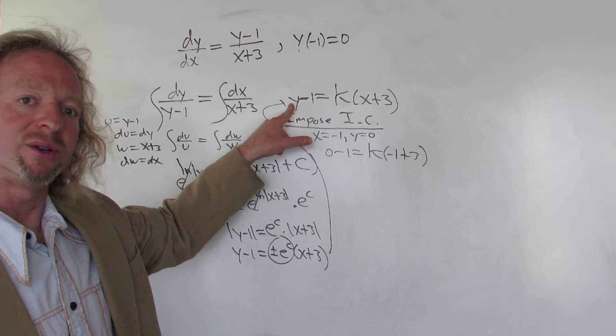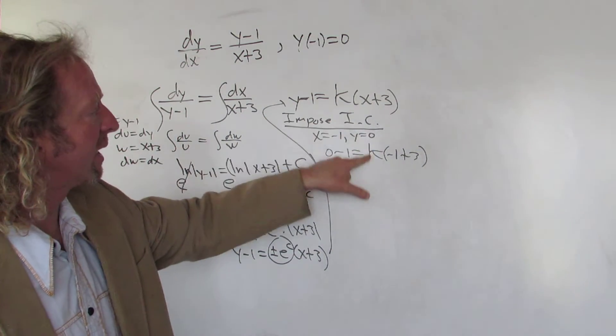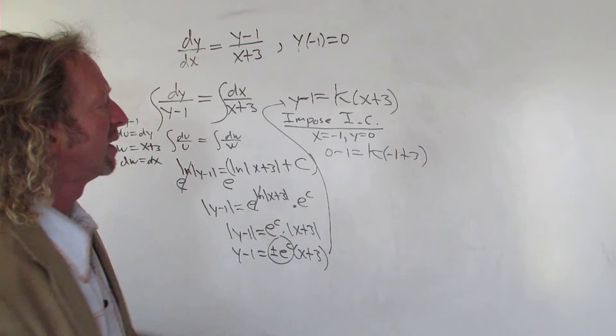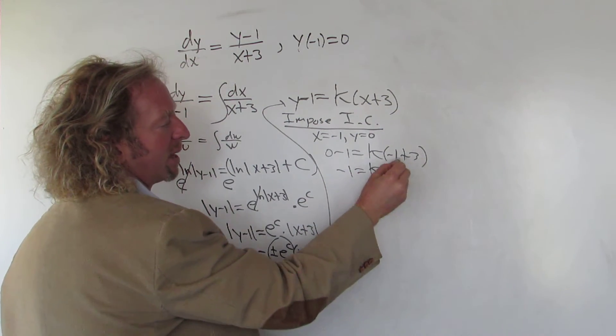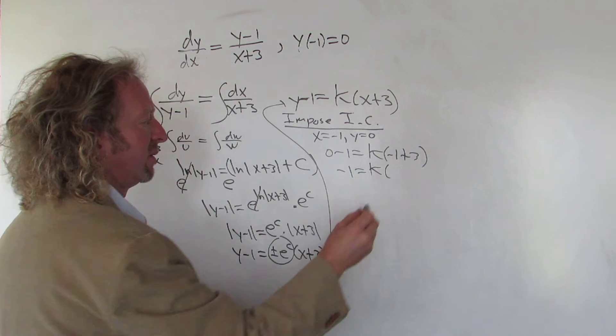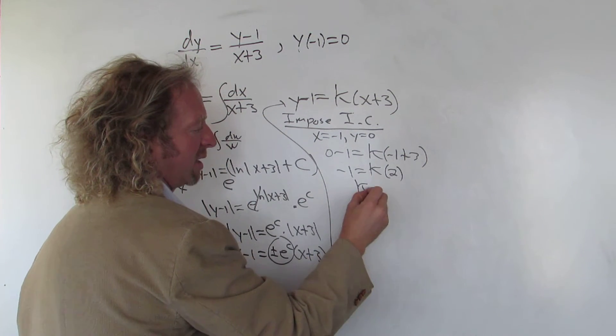So y is zero, we get zero minus one equals k times - x is negative one plus three. So this is negative one equals k times two. Divided by two, we get k equals negative one half.